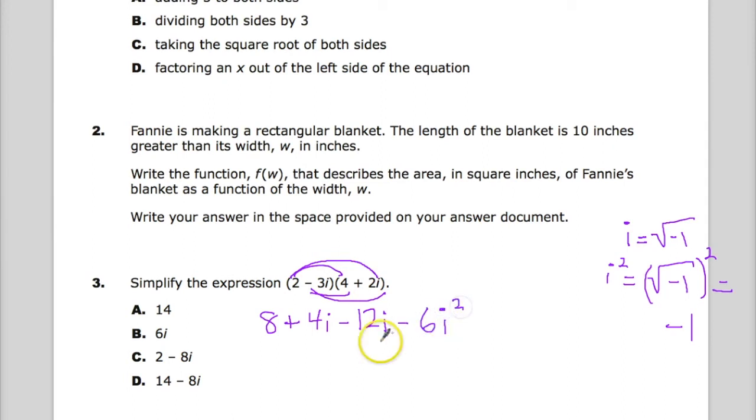Now the first thing I'm going to do is look for any like terms, and you can treat the i in this case almost like a variable. So 8 just drops down, 4 minus 12 gives me negative 8i.